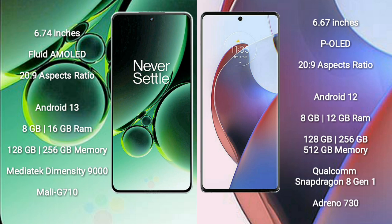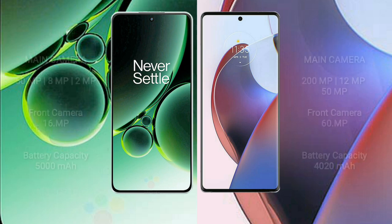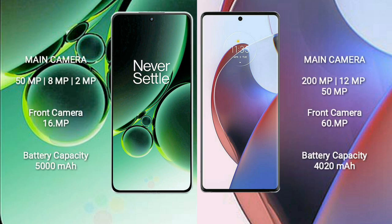Motorola Edge 30 Ultra comes with 8GB or 12GB RAM, 128GB, 256GB, or 512GB internal storage, a Qualcomm Snapdragon 8 Gen 1 processor, and GPU Adreno 730.